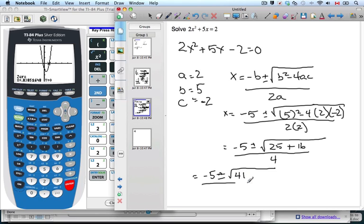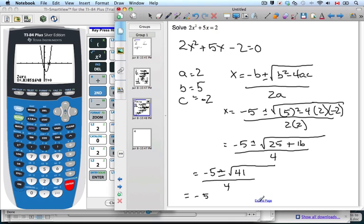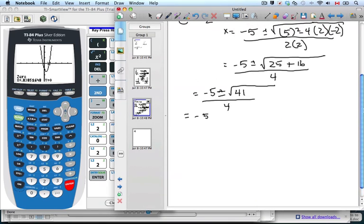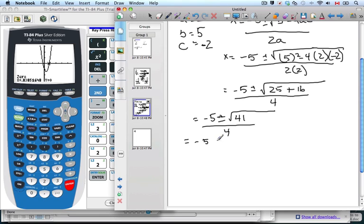Now I get 25, minus minus is a plus, so I get plus 16 all over 4, which will be negative 5 plus or minus. Oh, 25 and 16 is 41 I believe, over 4. So I get my two answers. One is negative 5 plus the square root of 41 all over 4. Or I get negative 5 minus the square root of 41 all over 4.